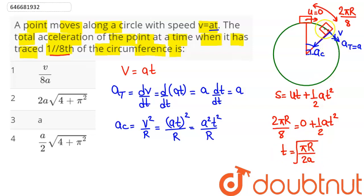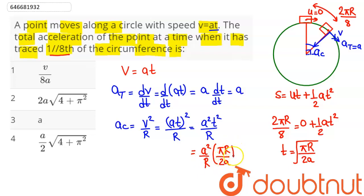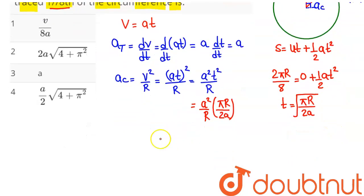At this position, speed v = at, so v² = a²t². The centripetal acceleration is a²t²/r. Substituting t² = πr/2a, we get centripetal acceleration = a²·(πr/2a)/r. The r cancels and one a cancels, giving centripetal acceleration = aπ/2. The tangential acceleration remains a.